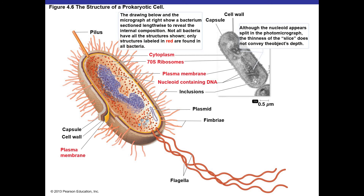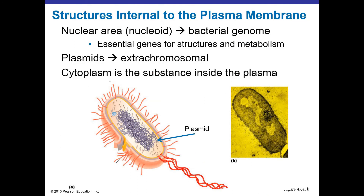Now we're going to talk about things truly inside the cell. Looking at structures internal to the plasma membrane, the most obvious is the nucleoid — the nuclear area where we find the bacterial DNA. The bacterial genome is one single circular chromosome. In the picture, it looks like a spaghetti mess, but it's actually one big circular chromosome coiled up on itself. The bacterial genome contains all essential genes for the cell to grow and metabolize.